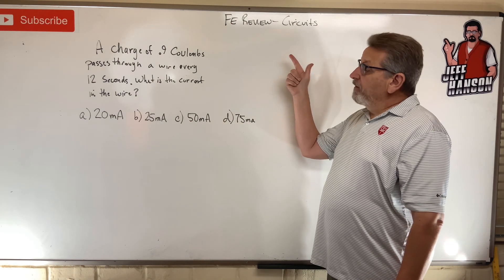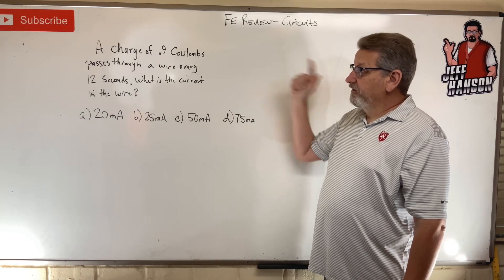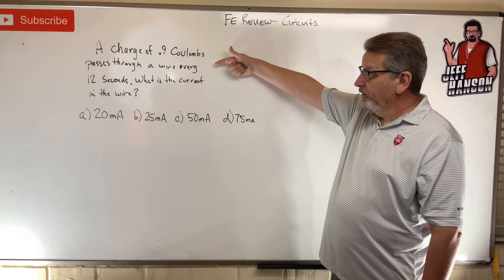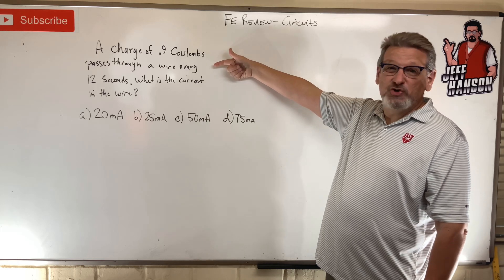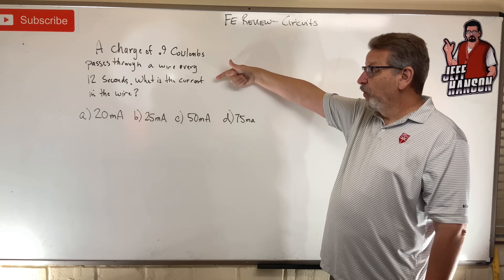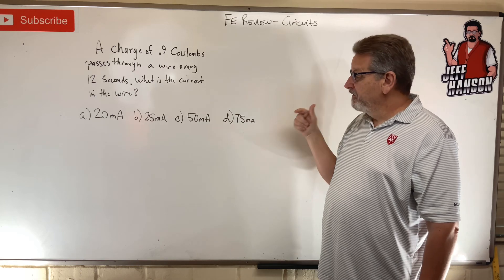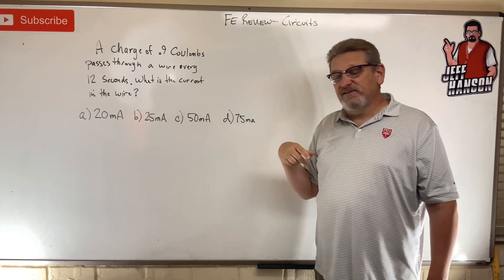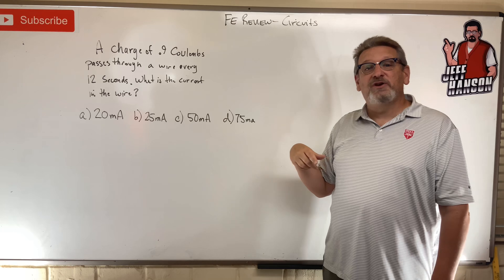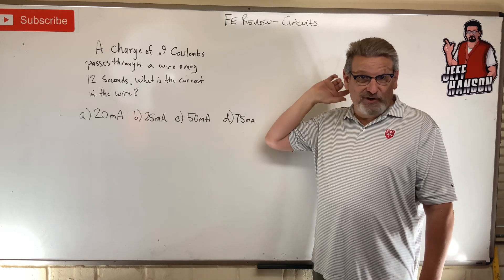Hey gang, FE review problem on circuits. A charge of 0.9 coulombs passes through a wire every 12 seconds. What is the current in the wire? Here are your choices. Press pause, work it out. When you come back, I'm going to show you how to do it. Ready, set, go.